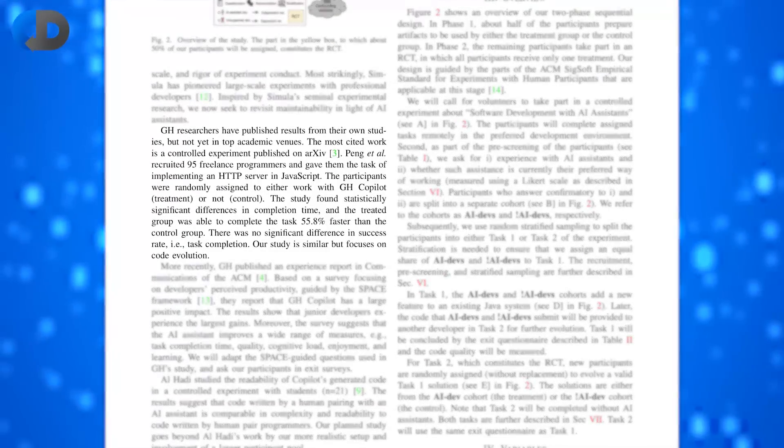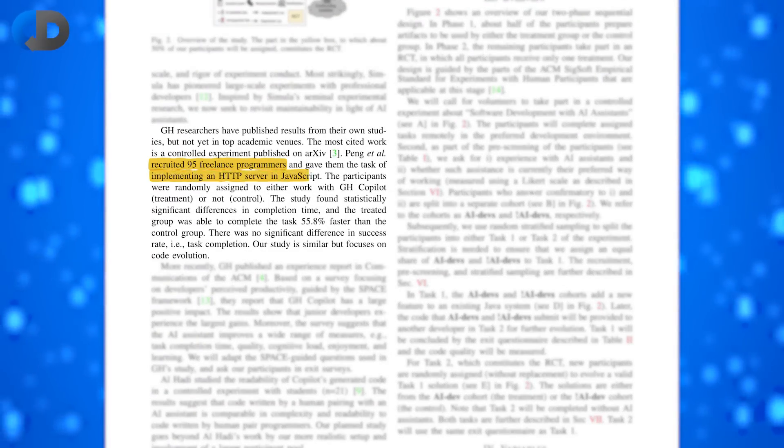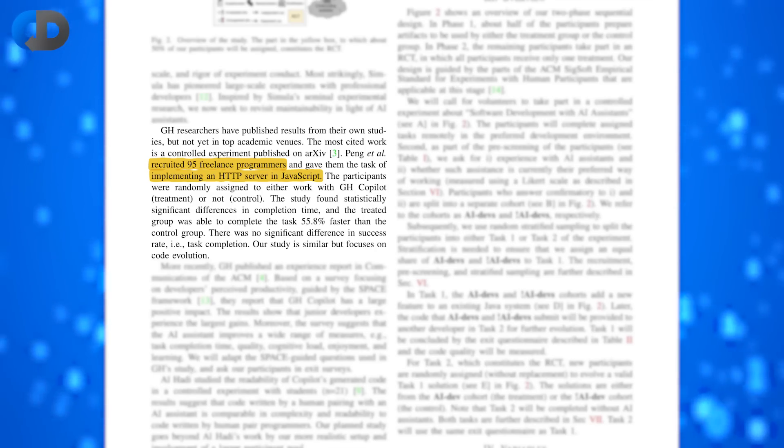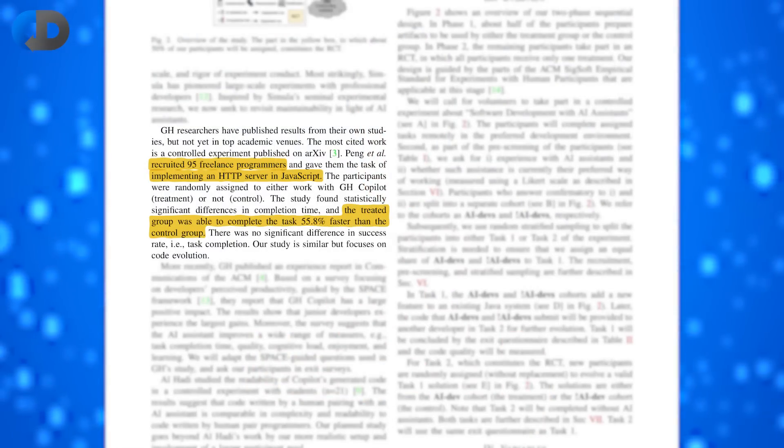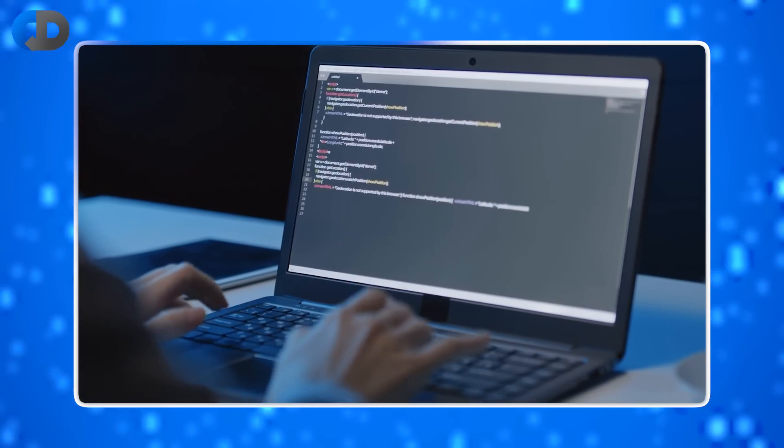GitHub conducted a study of the use of copilots with 95 professional programmers tasked with implementing an HTTP server in JavaScript a little while ago. This study found that AI assistants made the developers in the group that use the AI assistants 55.8% faster on average when completing this task than developers working without the aid of copilot. Our research is aimed to look at the, to me, more important measure of the maintainability of the output rather than short-term development performance, which as I've already suggested is a very poor measure of software development in the real world. Because if the output of AI-assisted code is easier to maintain, then we can be more confident that it really is helping us to improve our throughput. But if it's not easier to maintain, then AI-assisted code will ultimately be more costly in the long run than working without it.